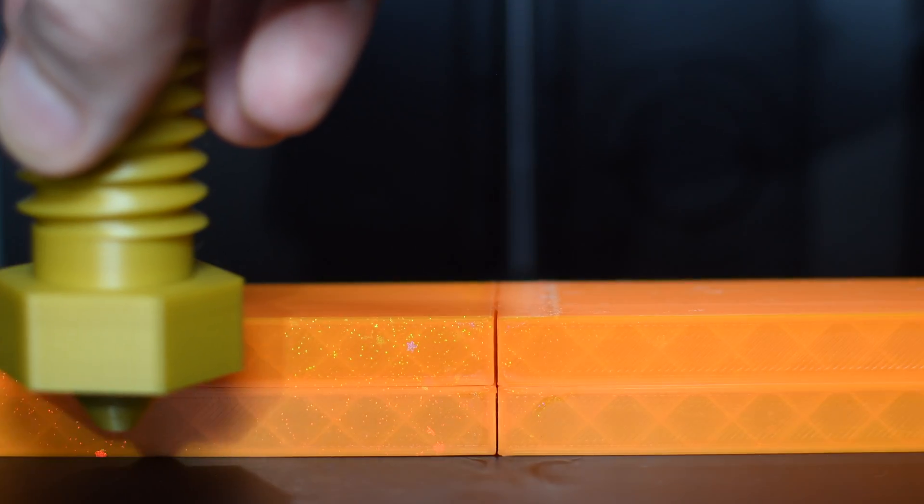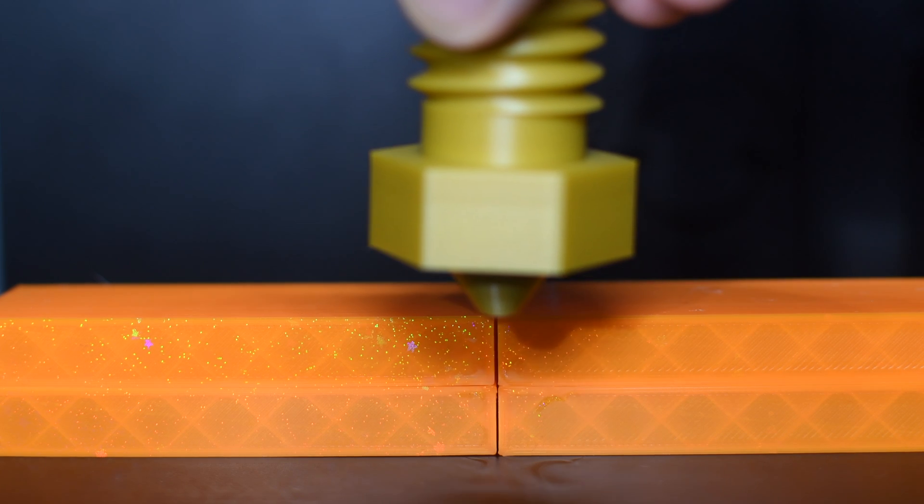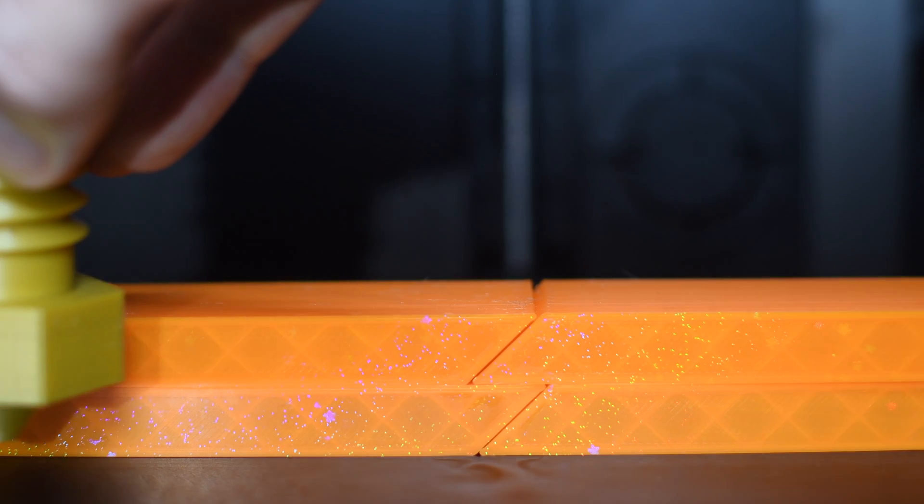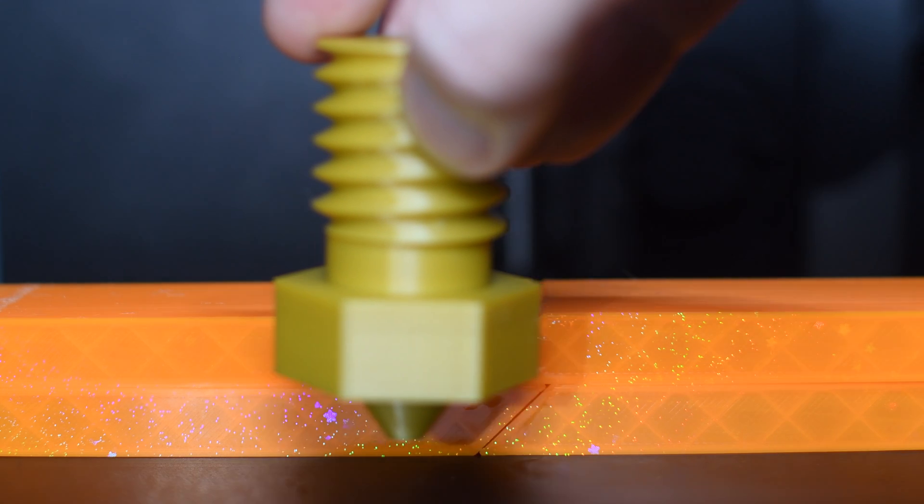In a normal seam the line ends abruptly and always in the same place. This makes it clearly visible.